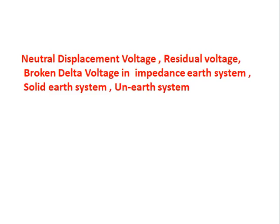In a solid earth system, fault current is used to detect earth faults. In an impedance earth system, fault current is low. In an unearthed system, there is no fault current, so for high impedance and unearthed systems, the voltage detection method is used. In a solid earth system, voltage is used to detect the direction of earth fault — it operates in the forward direction only, not in reverse.